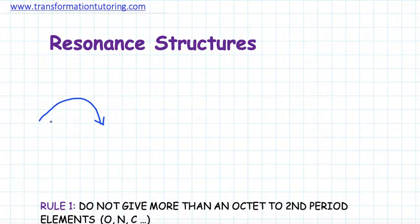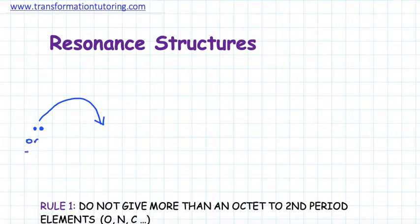What could these electron sources be? If we have a lone pair of electrons on an atom, that atom can give its electrons away. Or if we have a double bond, that also means it has extra electrons to give.